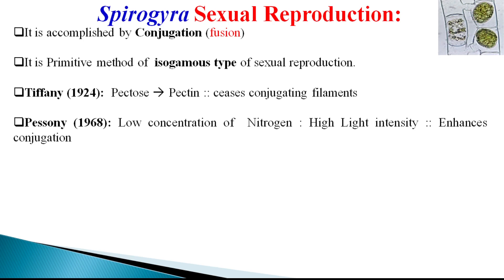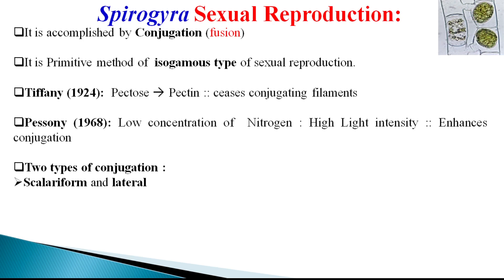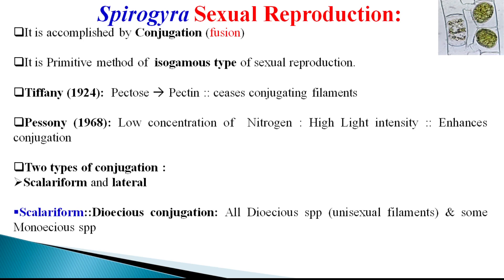Conjugation is the means of sexual reproduction and takes place toward the end of the growing season. Scalariform conjugation is the first type, which is the most common occurrence and takes place between opposite cells of two neighboring filaments. It is also called dioecious conjugation and is seen in all dioecious species, in which filaments are unisexual.